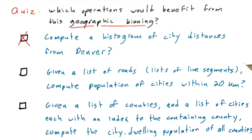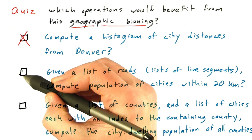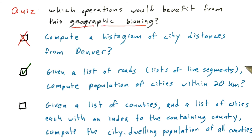On the other hand, if you have a list of roads and each road is a list of line segments, you could easily imagine launching a thread per road or a thread per line segment and using that geographic binning operation to compute which bins — which tiles, which grid cells — that line segment intersects, and computing the population of all cities within that grid cell or nearby grid cell. So yes, a geographic binning operation like we described would accelerate this kind of operation.